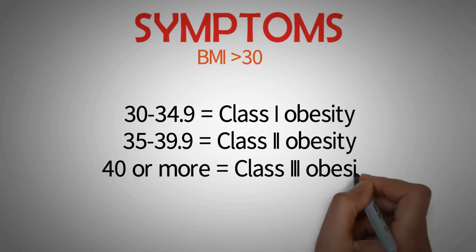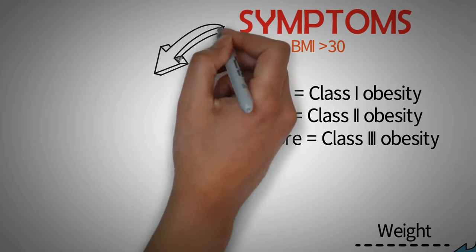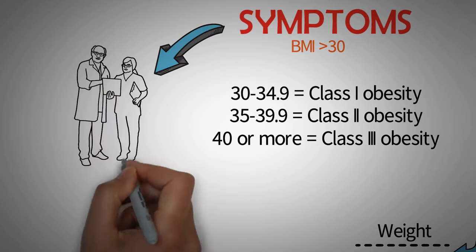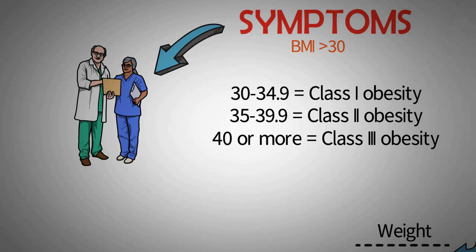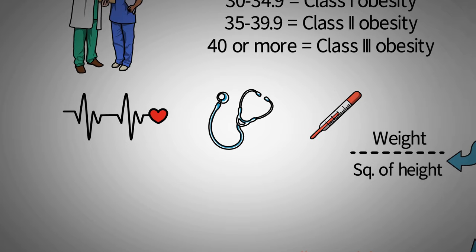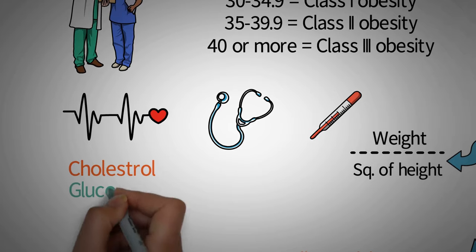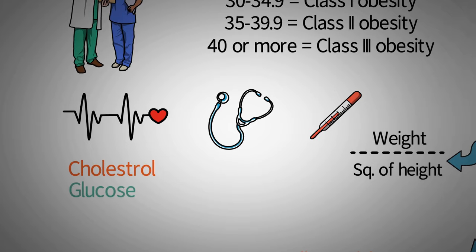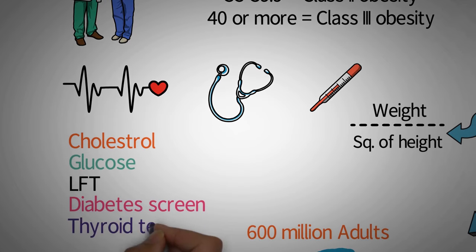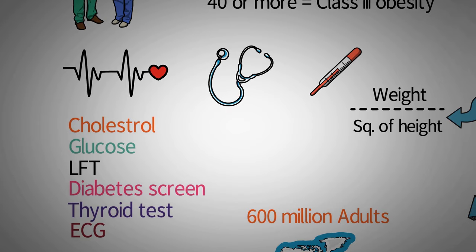If your BMI falls in the range of obesity, the doctor will review your family and health history and perform a general physical examination. This may include checking vital signs such as heart rate, blood pressure, and temperature. Blood tests may be used to examine cholesterol and glucose levels, liver function, diabetes screening, thyroid tests, and heart tests such as an electrocardiogram.